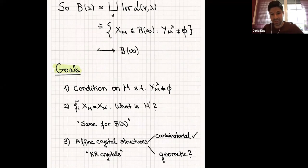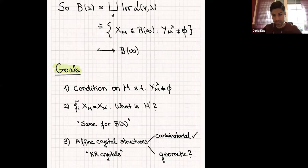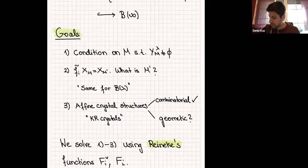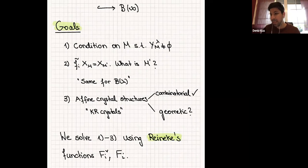For the KR crystals, there are combinatorial models but no known geometric models. We solve goals one, two, and three using Reineke's functions F_i^∨ and F_i, which are certain functions on the Auslander-Reiten quiver. Let me first state the main theorem and then explain the ingredients.